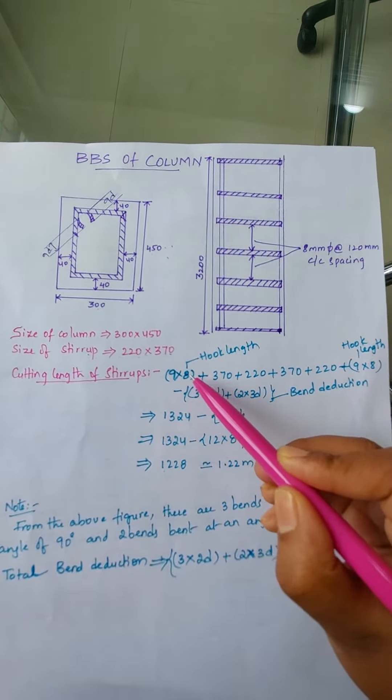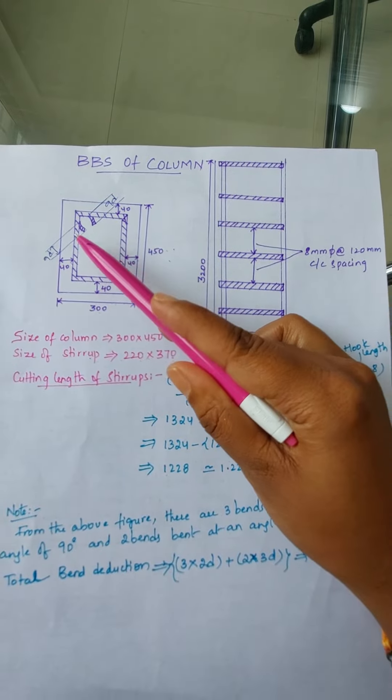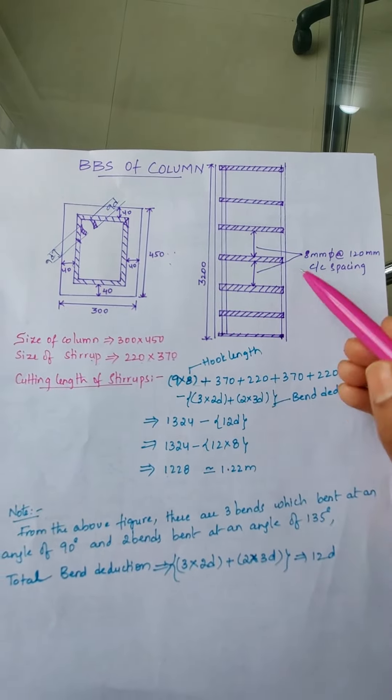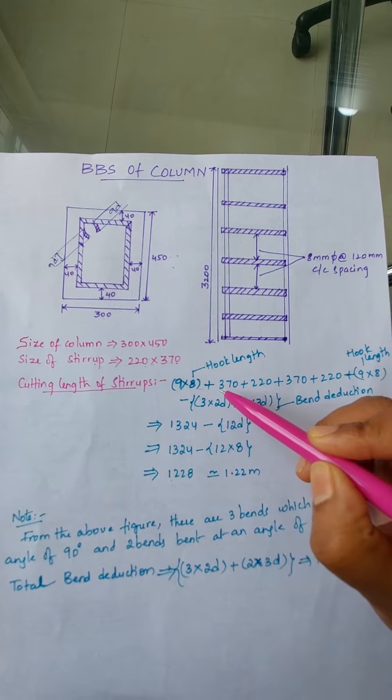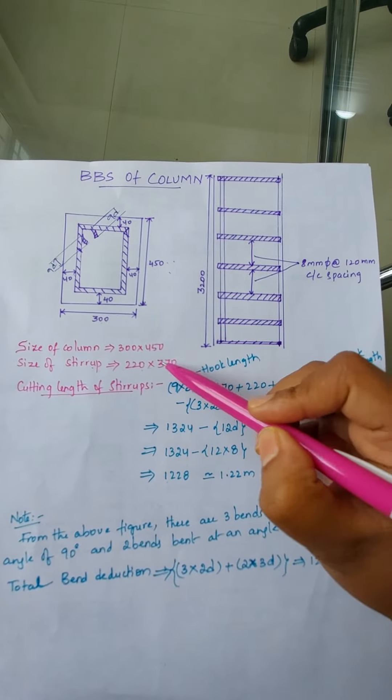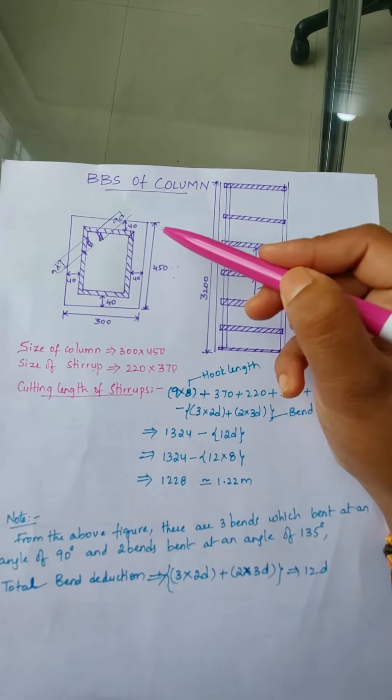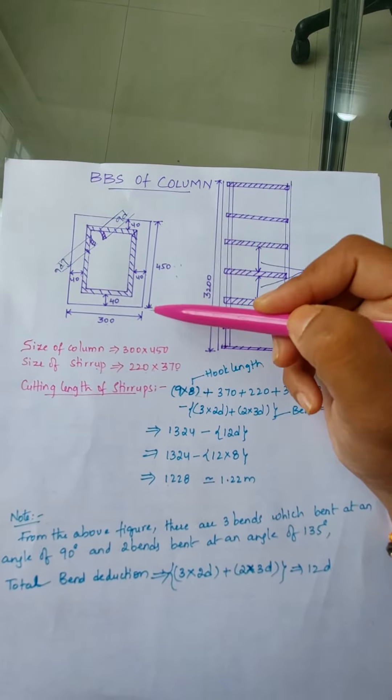To find out cutting length of stirrup, the formula is 9 into 8 for this bend. Here 8mm diameter steel we are using, so that plus 370 plus 220 plus 370 plus 220 again, another hook length, so 9 into d.